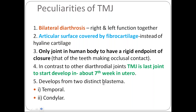The TMJ is the only joint in the human body to have a rigid end point of closure — meaning both teeth can be kept in occlusal contact with no gap between the joints. It is also the last joint in the body to develop, at about the seventh week in utero, and it develops from two distinct primordia: temporal and condylar.